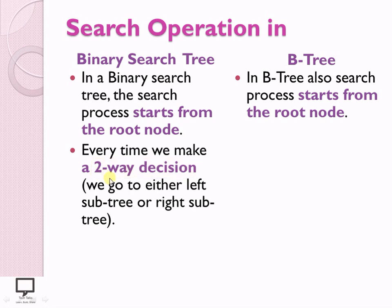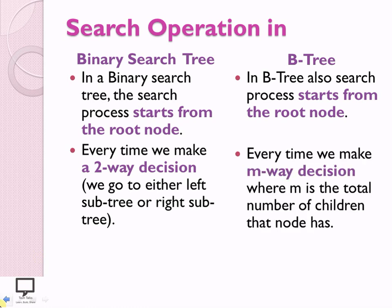Two-way decision means: we have two keys, and I can perform the search operation in the left subtree as well as the right subtree. At a time, I take a decision to go either to the left subtree or to the right subtree. But in case of B-Tree, I need to take an M-way decision, where M number of keys are present. If N number of children are there in an M-order tree, I need to decide M times where to go.